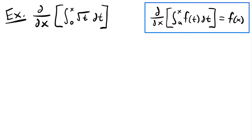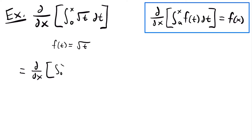For this example, we want to find small f of x. The quick answer would be to just plug the upper bound x into this function, and you'd find that f of x is equal to the square root of x. But instead we'll show our work. Let's define f of t as equal to the square root of t. Then our problem is equal to the derivative ddx of the integral from 0 to x of f of t, dt.